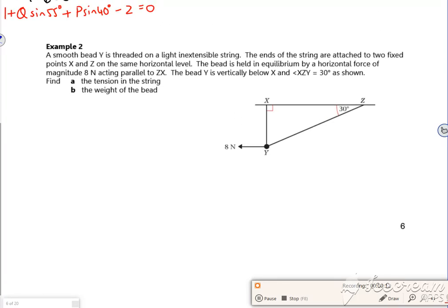So it says, a smooth bead is threaded on a light inextensible string. The ends of the string are attached to two fixed points X and Z on the same horizontal. The bead is held in equilibrium by a horizontal force of 8 N, acting parallel. The bead Y is vertically below X and the angle is 30 degrees. Find the tension in the string.